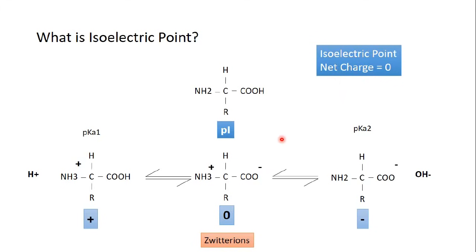The isoelectric point is the pH at which the amino acid holds a zero net charge. The same is applicable to proteins. You might think the isoelectric point of a protein is a pH at which all the amino acids in the protein hold a zero charge — this is not true. A protein is a chain of amino acids; when a protein holds a zero charge, it means that half of its amino acids are positively charged and half are negatively charged.